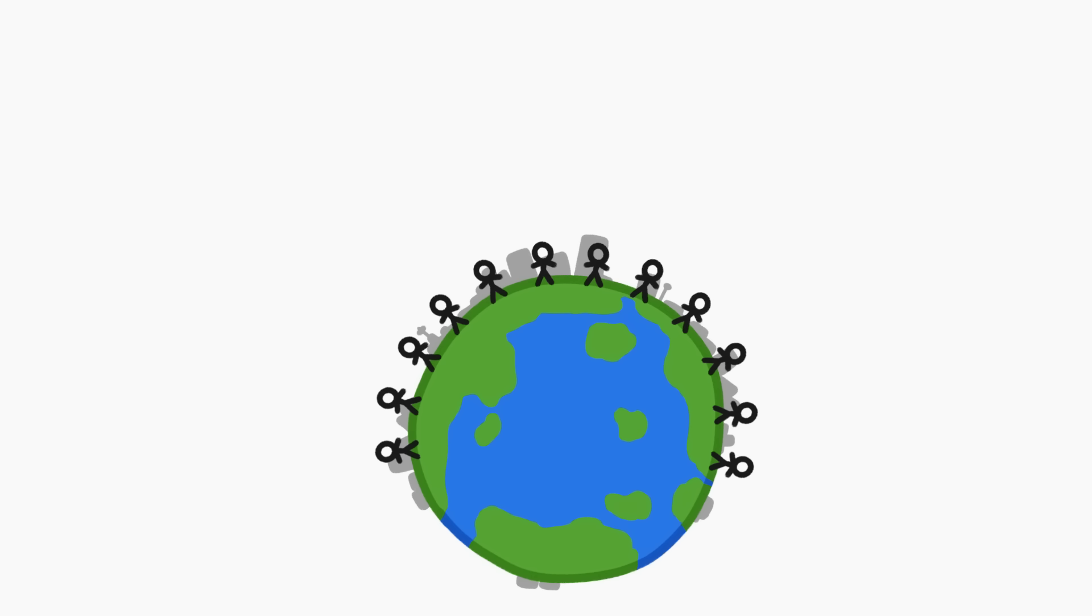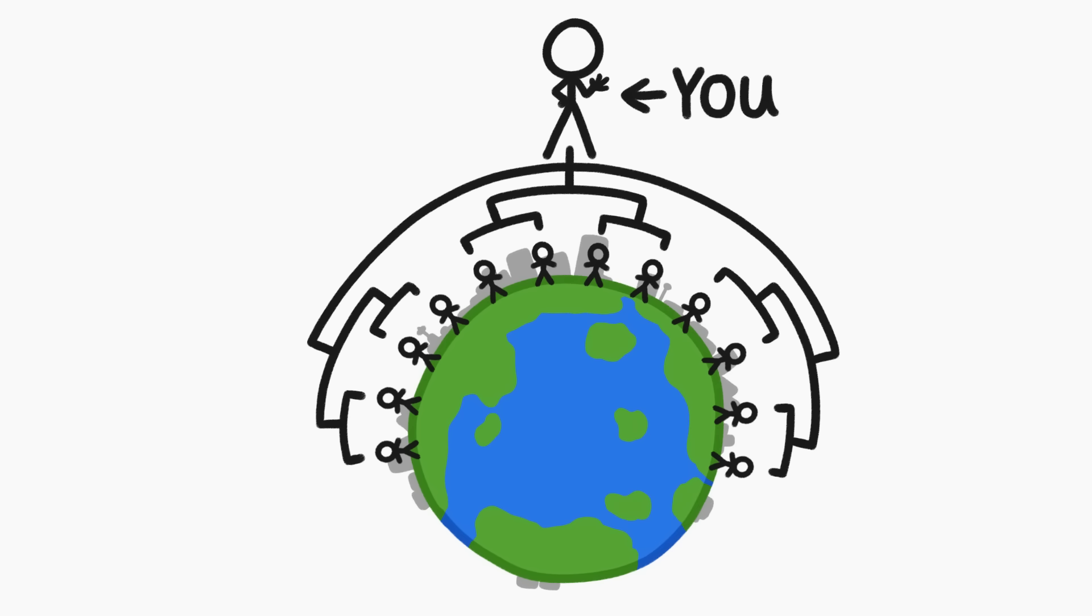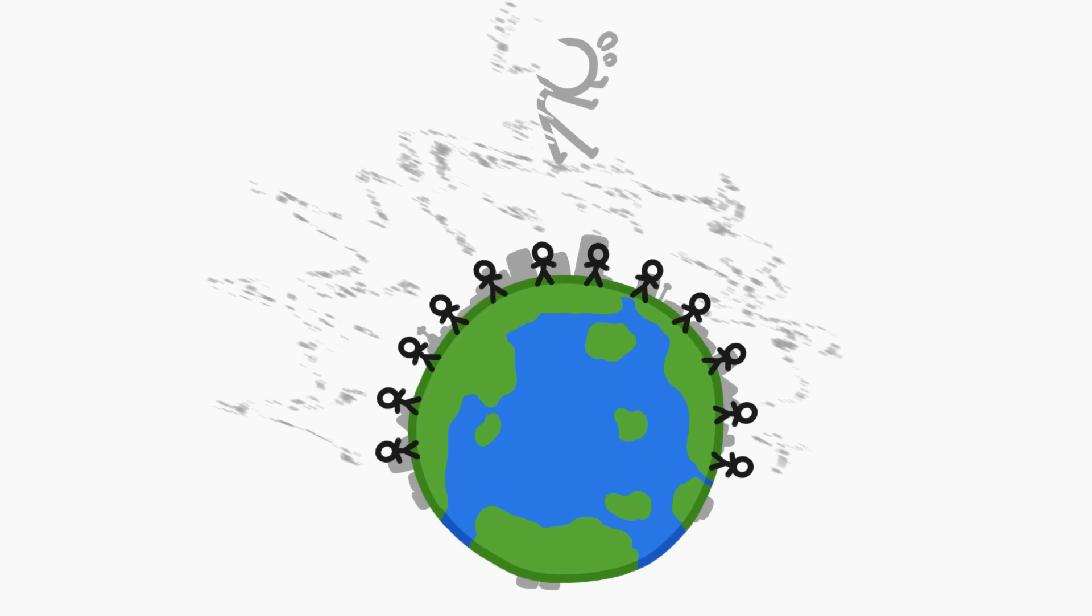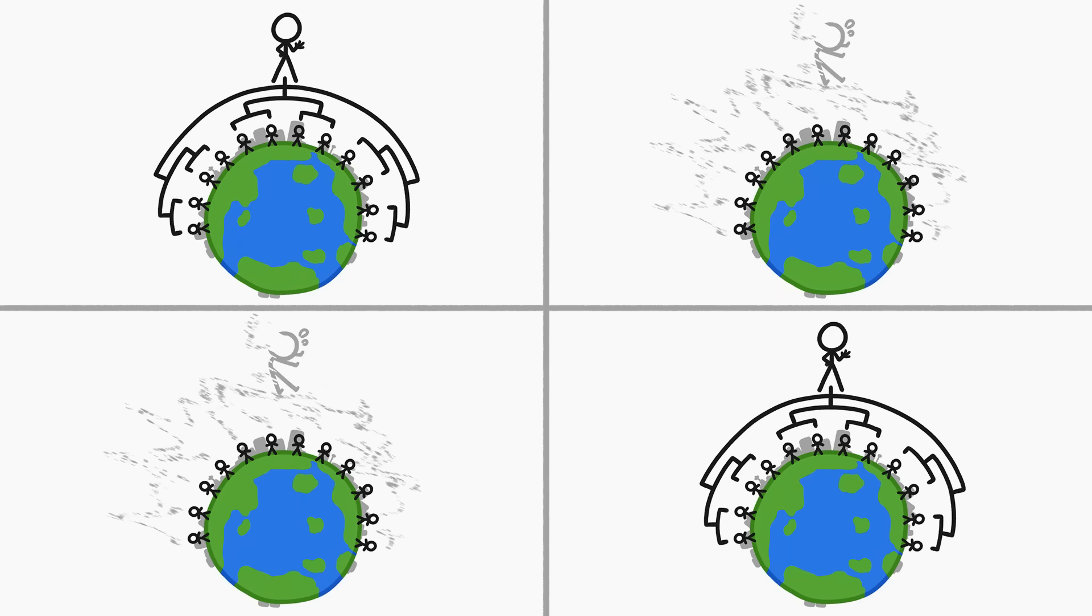One day in the future, either everybody on Earth will be your great-great-great-great-great-ish grandchildren, or your entire lineage will have died out completely. And this applies to every single person alive today.